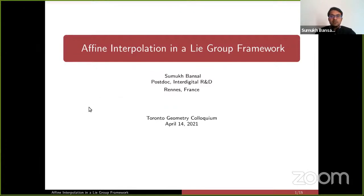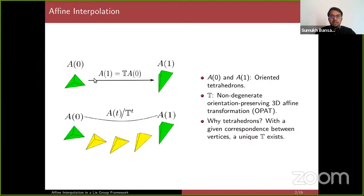Let's take a simple example to understand affine interpolation. Assume that we have two tetrahedrons, A0 and A1, related by a global affine transformation T, and we want to generate intermediate tetrahedrons. Mathematically, this task boils down to taking the root of the affine transformation T. This process of generating intermediate objects between a pair of objects related by a global affine transformation is known as affine interpolation.